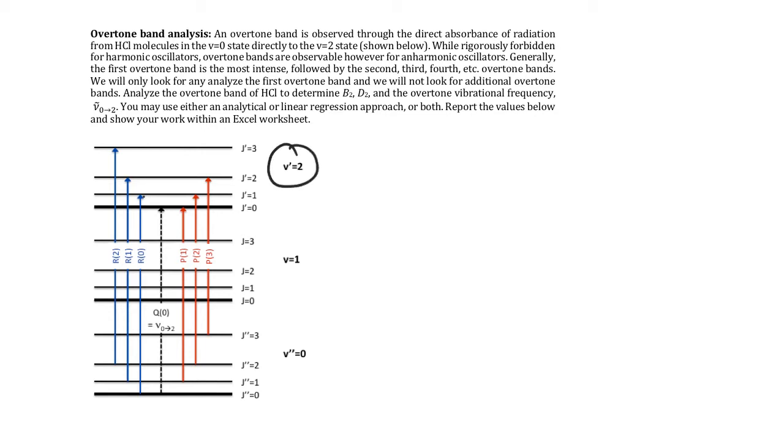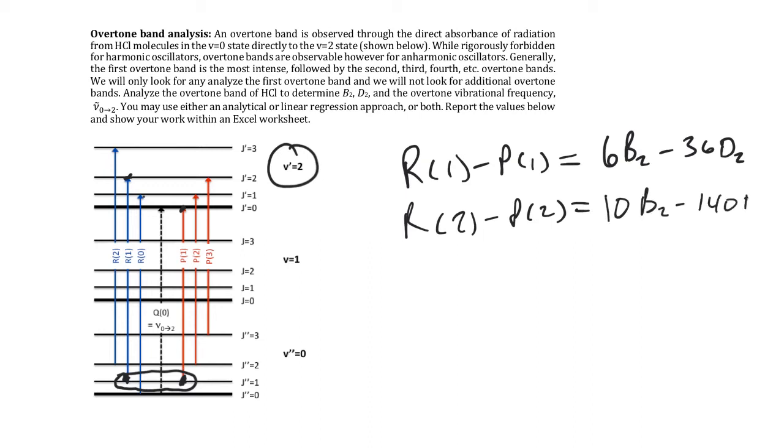Just remember, if we want to find B2 and D2, what we want to do is choose the transitions that start in the same energy level, and then excite to different energy levels. So if we take the R1 minus the P1, for example, the R1 goes up to 2, starts in 1. The P1 starts in 1, goes up to only 0. So this works out to be equal to 6B2 minus 36D2. And as you guessed it, R2 minus P2 ends at 10B2 minus 140D2. And hopefully you can show that to yourself if you're not sure.